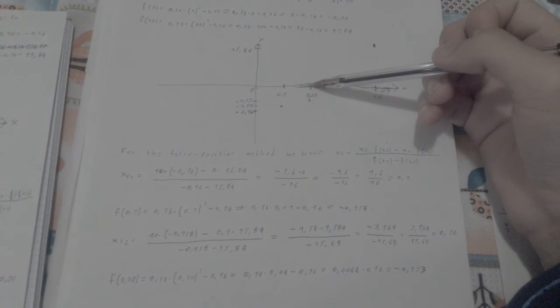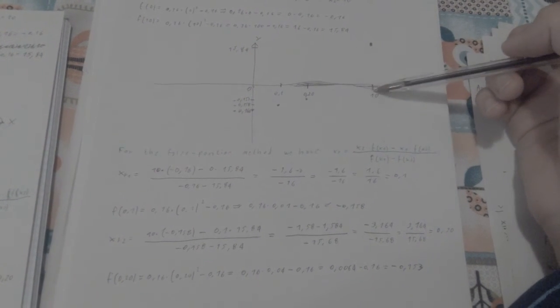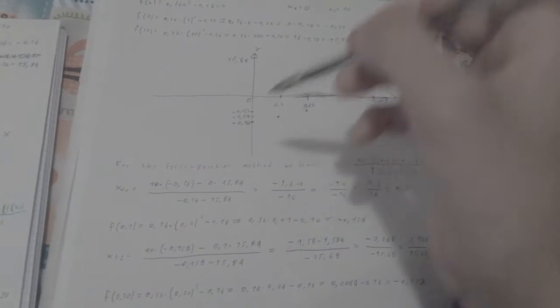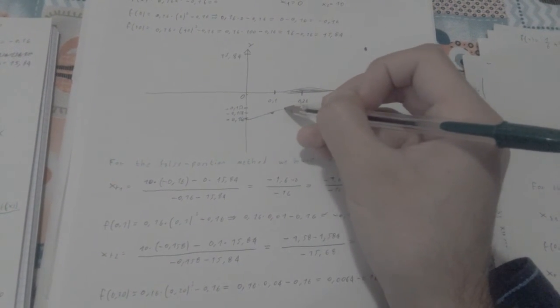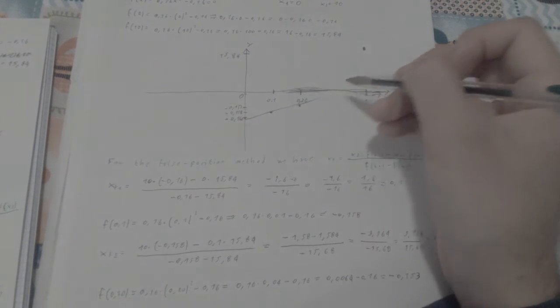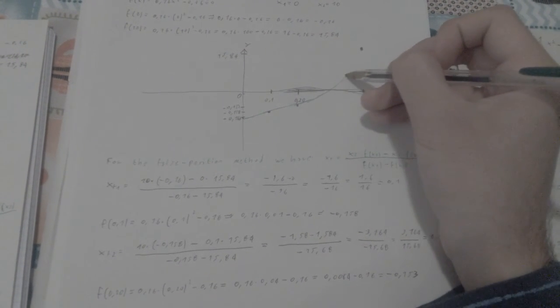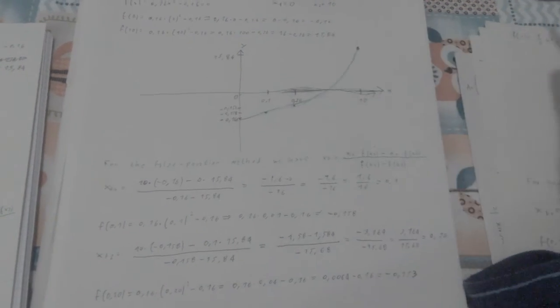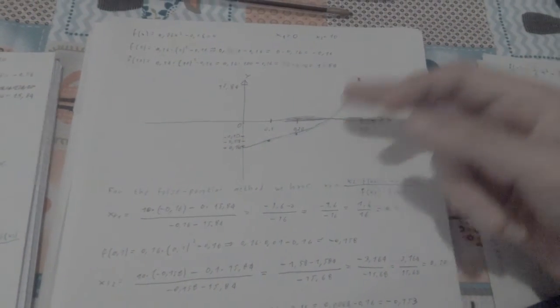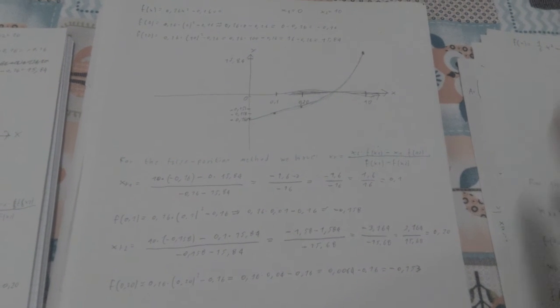We could go on and use 0.20 as our x1 and 10 as our x2, but as always, I'm not going to go any further with these iterations. So this is actually going to be our best guess for this function this time.